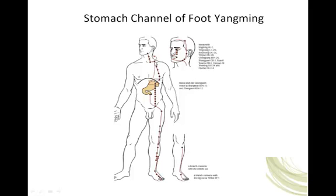The external branch of the channel descends from stomach 12 along the anterior portion of the body — the anterior chest — four cun lateral to the anterior midline. This is called the mammillary line, running right through the middle of the nipple, from stomach 17 to stomach 18. Then the channel moves two cun medially, going from four cun lateral to the anterior midline to two cun lateral at stomach 19. It then runs two cun lateral to the anterior midline straight down to the inguinal region to stomach 30, where it then moves laterally to the lower extremity at the anterolateral portion of the lower extremity at stomach 31.